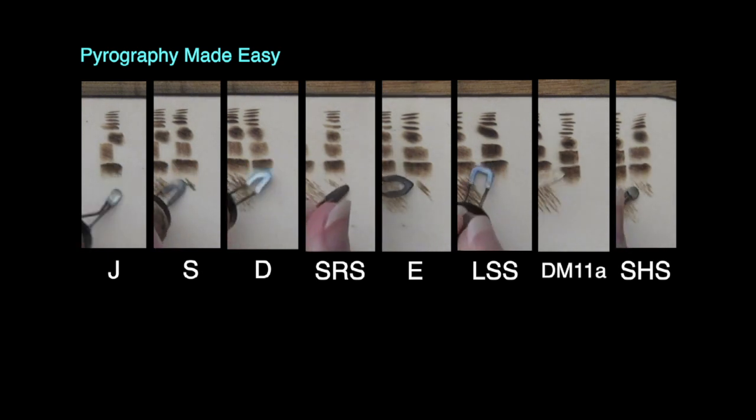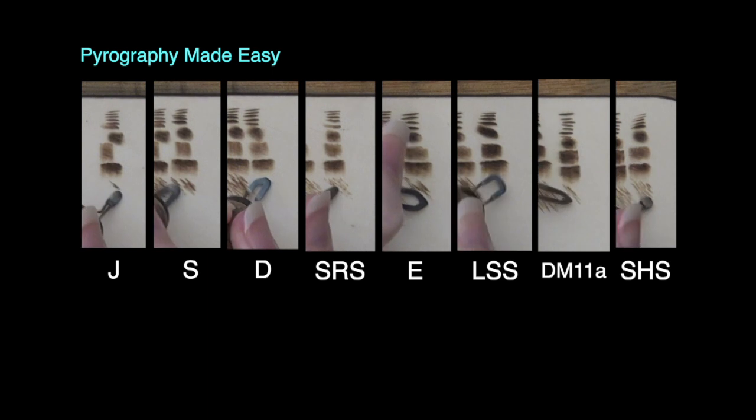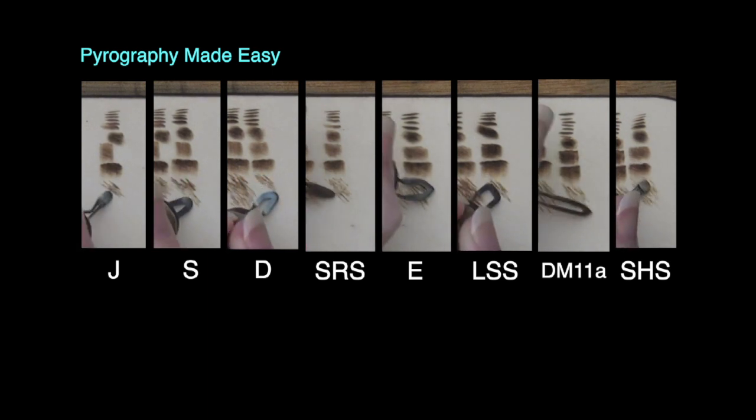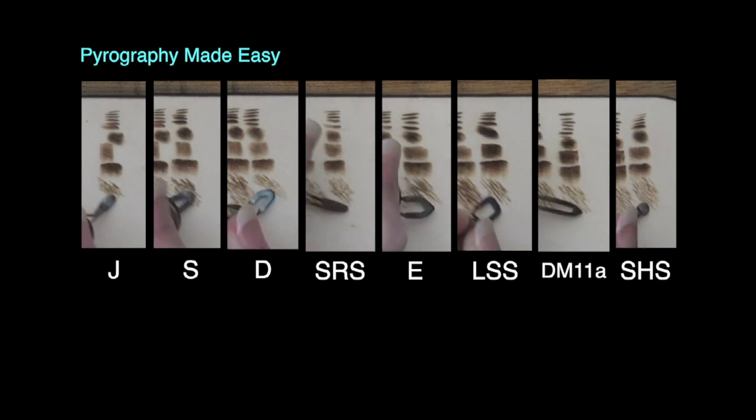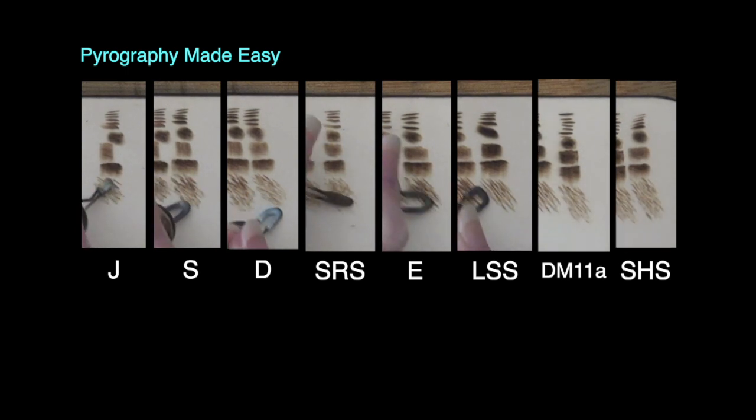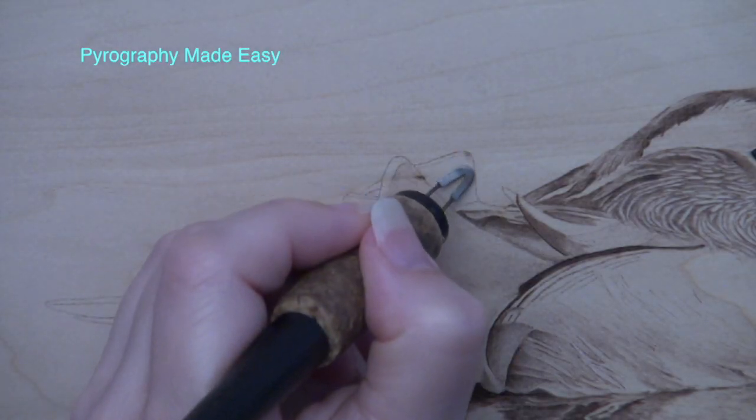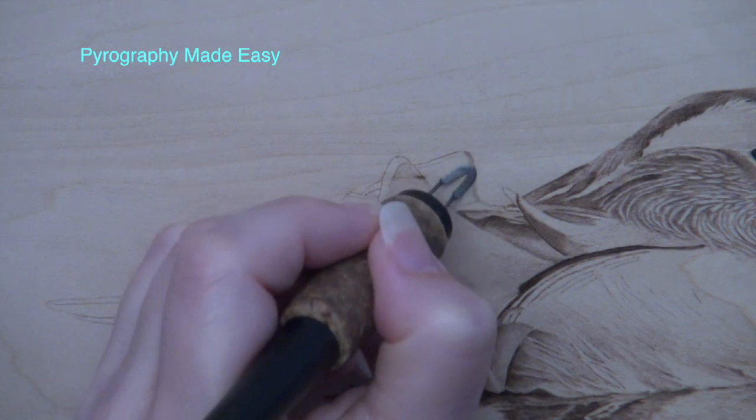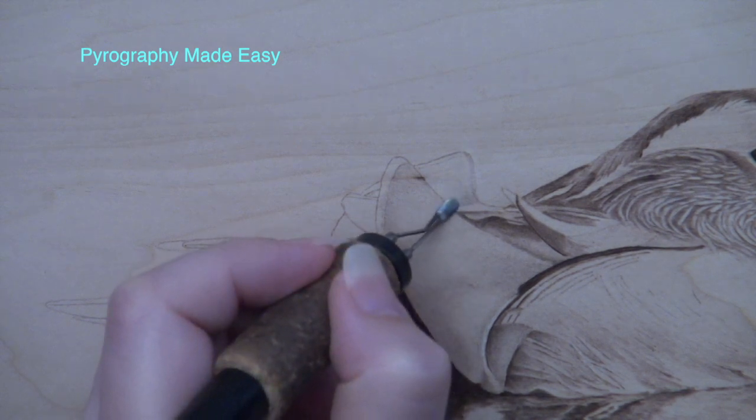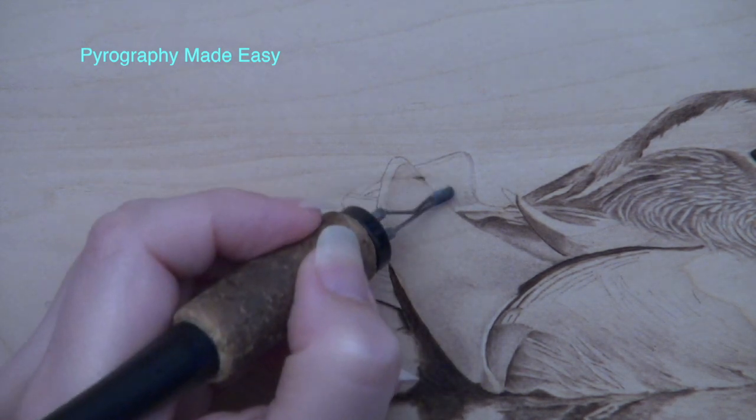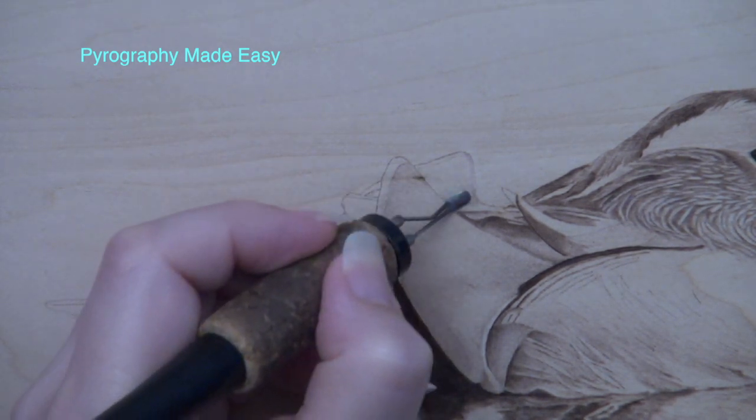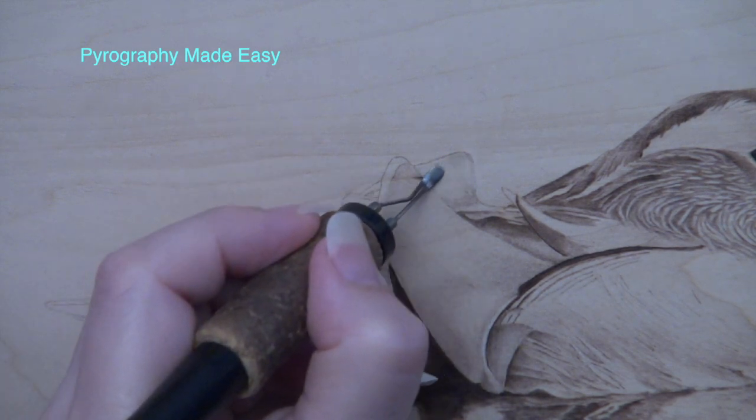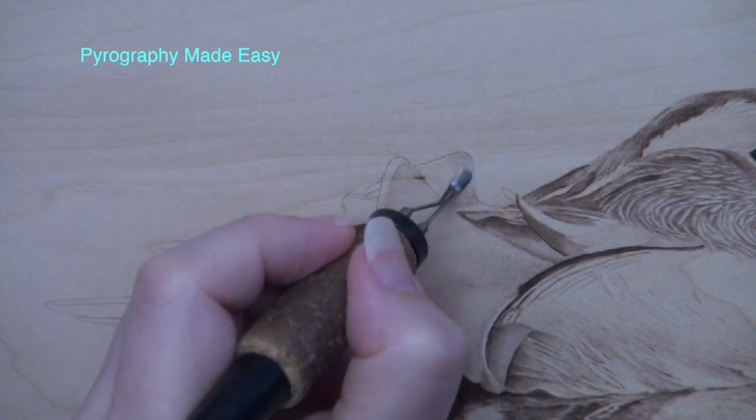I have a number of shaders and I pick my shader based on the size of the area that I will be working in. The shader I'm using right now is a touch too big. It almost fills up the entire area that I'm trying to stay in. So I switched to a smaller shader because it fits better and that made it easier to stay within the boundaries of the area I was burning.